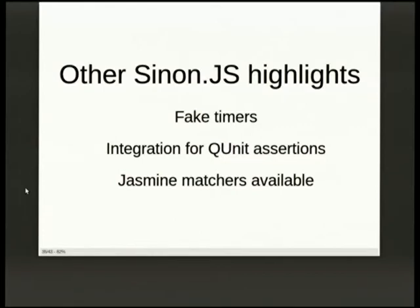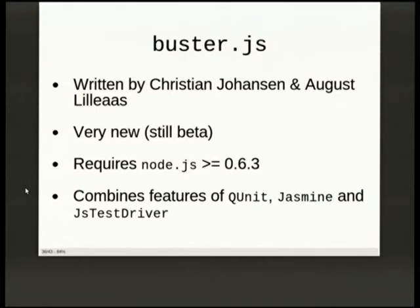I do use Sinon quite a lot and recommend it if you do Ajax work. There are also good integrations with QUnit and Jasmine available. The fake timers are quite useful — if you want to test transitions over a certain number of milliseconds, you can just immediately fast-forward the system clock 5,000 milliseconds or whatever, then check that some element has been removed from the page. I was going to talk about Selenium and JS Test Driver, but instead I want to show this very recent and really promising tool. It's from the same author as Sinon. It requires Node.js and combines a lot of features of QUnit and Jasmine into one tool, plus some very cool extra things.